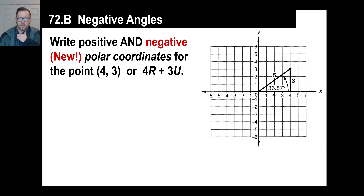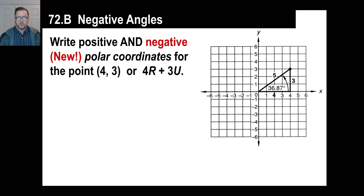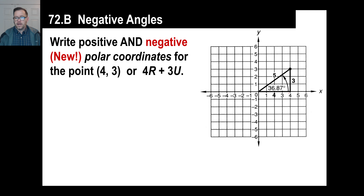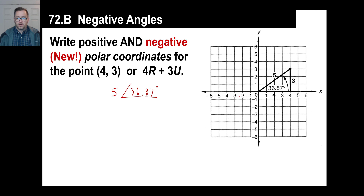Here is a slight twist - we're going to look at positive and negative polar coordinates. Get out a piece of graph paper and let's figure this out together. We're going to write the coordinates for a point. Remember that R and U are basically synonymous with X and Y. If they give you 4 and 3 for your R and U, you can use the Pythagorean theorem to find the length of the hypotenuse.